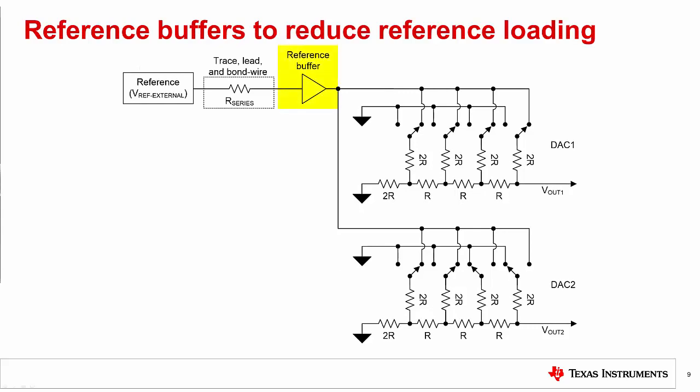The addition of a reference buffer reduces the effect of the series resistance between the reference input and the DAC ladder. This greatly improves DC channel-to-channel crosstalk, though it does add a source of AC crosstalk, as the changing load on the reference buffer could cause a glitch on the reference voltage for both DACs.